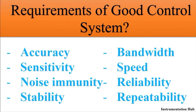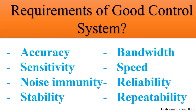Let's overview what we have seen in this video. We have seen eight major characteristics of a good control system: high accuracy, high sensitivity to input, ability to reject noise, stable output for any variation in input, high bandwidth, fast response time, high reliability, and high repeatability — producing the same output for the same repeated input.